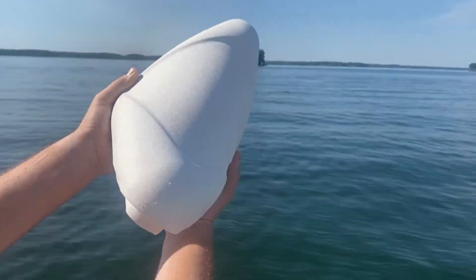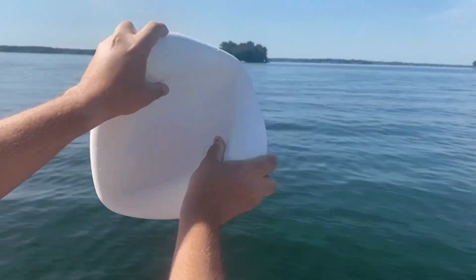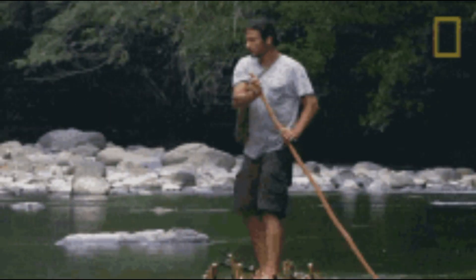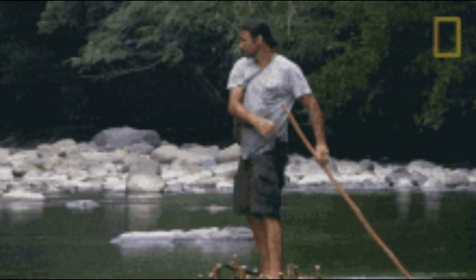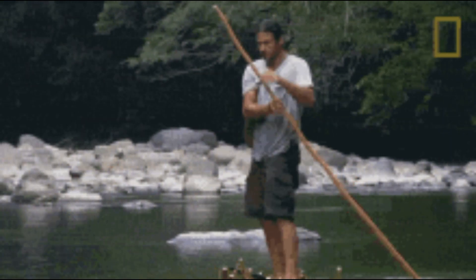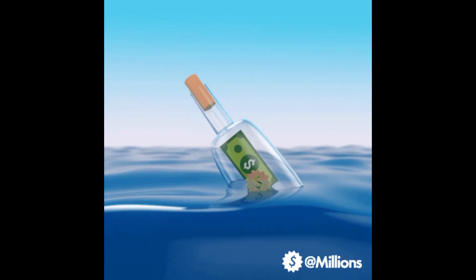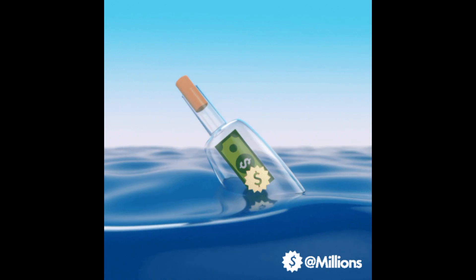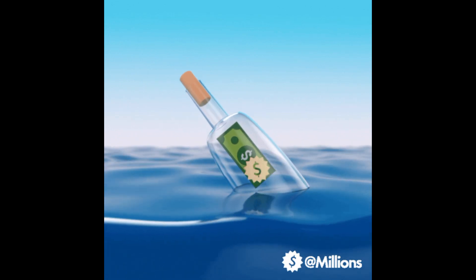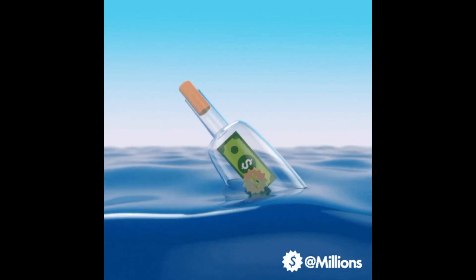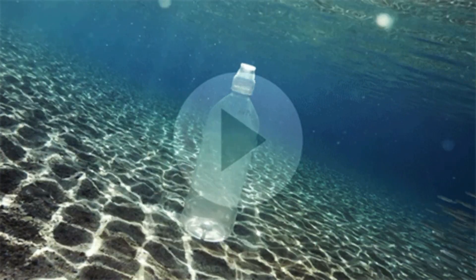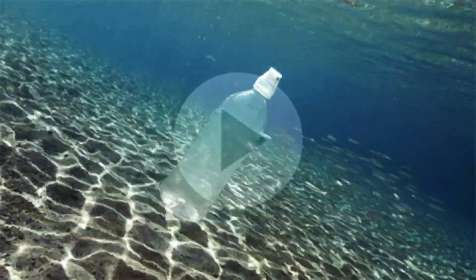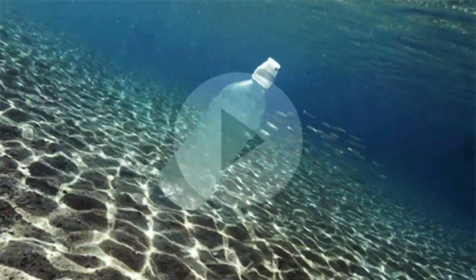An object's shape can affect its ability to float, but some materials float no matter what their shape, such as styrofoam and balsa wood. Some things float at first but then sink as they absorb water or take water in through holes.